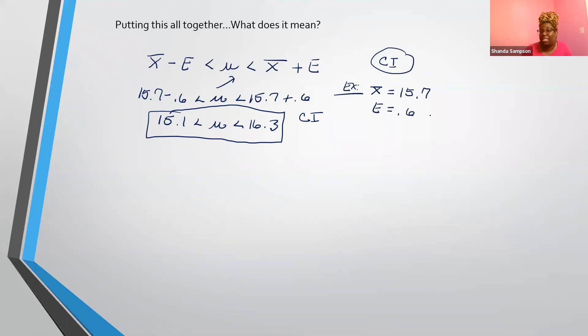So with that being the case, we would have 15.1 is less than mu is less than 16.3. So this would be our confidence interval right here. Basically getting a confidence interval is as easy as adding or subtracting your error, right? Your error term. Well, of course, this is statistics. So we're not going to be given the error term.